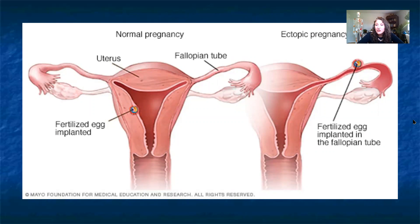This slide shows the differences between a normal pregnancy and an ectopic pregnancy. When an egg is normally fertilized, it should implant in the lining of the uterus, not the lining of the fallopian tube. An ectopic pregnancy is a very dangerous condition that a lot of times has to be surgically removed and usually ends in termination of the fetus.